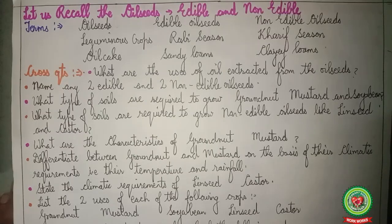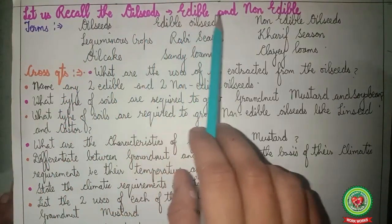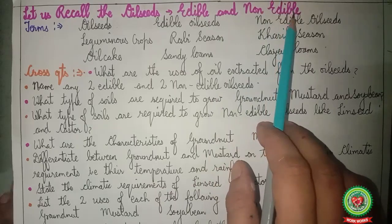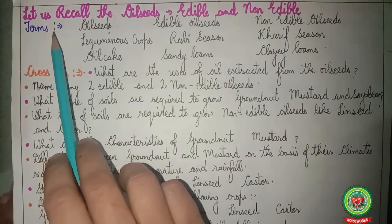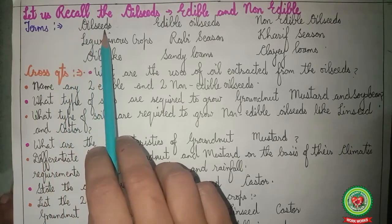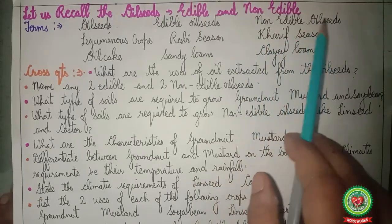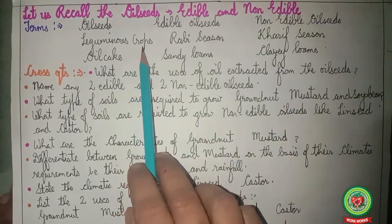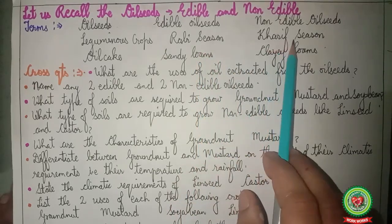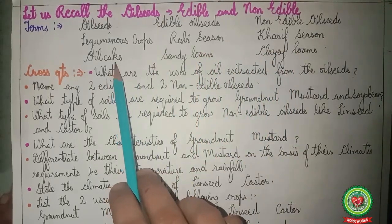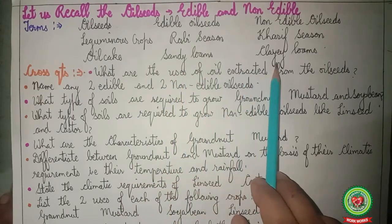Before proceeding with the new cash crop, let us recall oil seeds — both edible and non-edible — through various terms and cross questions. The terms covered include: oil seeds, edible oil seeds, non-edible oil seeds, leguminous crops, rabi season, kharif season, oil cake, sandy loams, and clay loams.